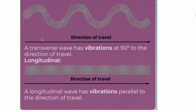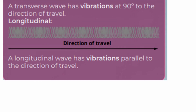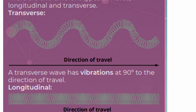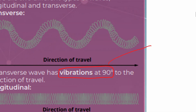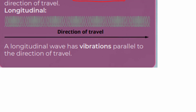So in summary, if we look at the two types of waves: the first type is a transverse wave — vibrations 90 degrees to the direction of travel. The longitudinal wave has vibrations parallel to the direction of travel. Keywords again: transverse wave, vibrations 90 degrees — remember you can use perpendicular instead of 90 degrees. And for longitudinal waves, vibrations are parallel to the direction of travel. You need to learn and remember that.